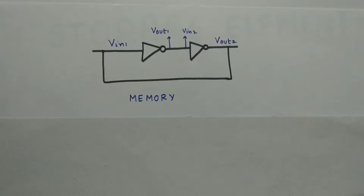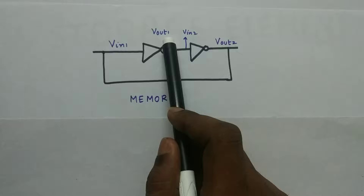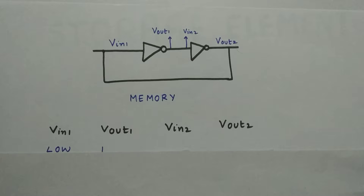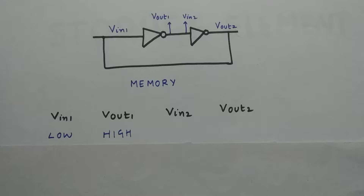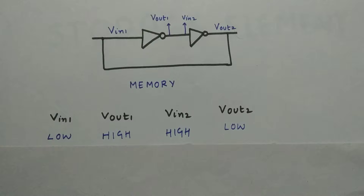Now let us analyze this circuit digitally. We have VIN1 as one input, VIN2 as the output of the first inverter, and VOUT2 as the input for the first inverter. Let's give values and check. Let's say VIN1 is low. When VIN1 is low, VOUT1 will be high. VOUT1 is carried as input for the next inverter, so VIN2 will also be high. When VIN2 is high, VOUT2 will be low. So we are giving low as input and getting low as output — it is able to store a certain value indefinitely until we disturb it externally.